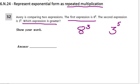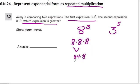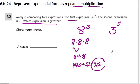This is saying 8 repeated as multiplication 3 times. Well, 8 times 8 is 64. Times 8: I think of 8 times 60, which is 480, plus 8 times 4, which is 32, and that equals 512. So 8 to the 3rd power is 512 — pretty big number.